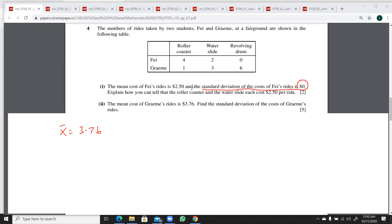From the first part, the mean cost of his rides is $2.50. He's had six rides, so that means Σx over 6 equals $2.50. In fact, all of them are $2.50.